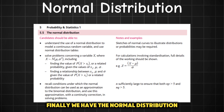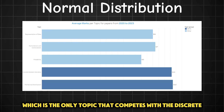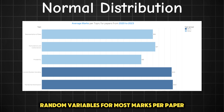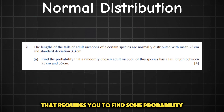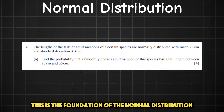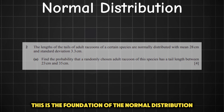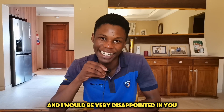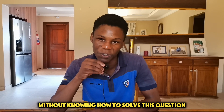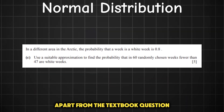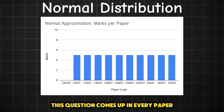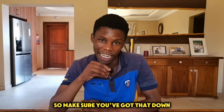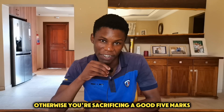Finally, we have the normal distribution, which is the only topic that competes with discrete random variables for most marks per paper. You're likely to get your textbook normal distribution question that requires you to find some probability — this is the foundation of the topic and you must know how to solve it going into the exam. You should also get comfortable with the normal approximation question, which comes up in every paper and always carries five marks, so make sure you have that down or you're sacrificing five marks.